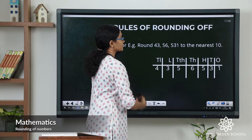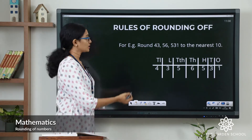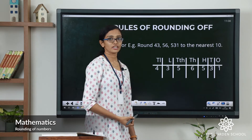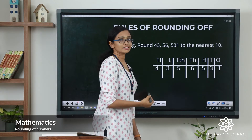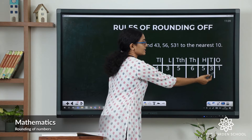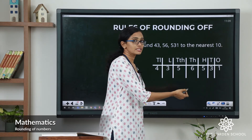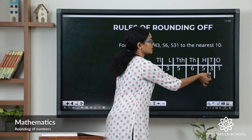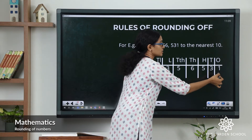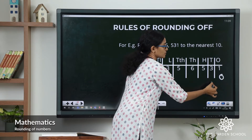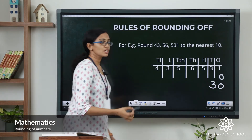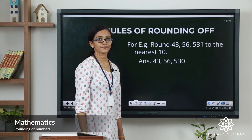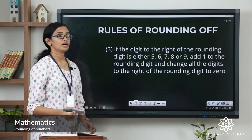Let's see one example. Look at this number: forty-three lakh fifty-six thousand five hundred thirty-one. You have to round this number to the nearest ten. I have written the number here in the place value chart. Since we are rounding it to the nearest ten, the rounding digit is the tens digit, which is 3. We check the digit to the right of it, which is the ones digit — it is 1, which is less than 5. So we keep the rounding digit as it is and change the digit to its right to zero. The answer will be forty-three lakh fifty-six thousand five hundred thirty.